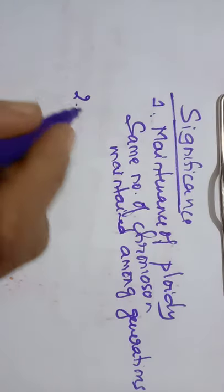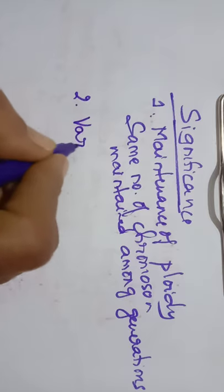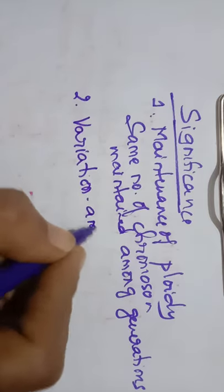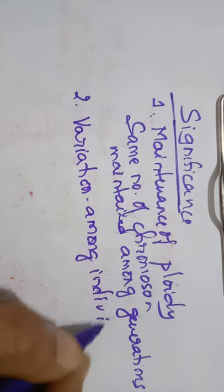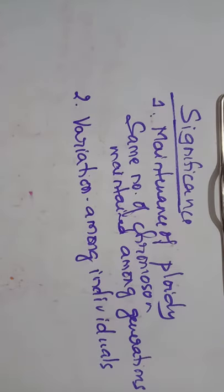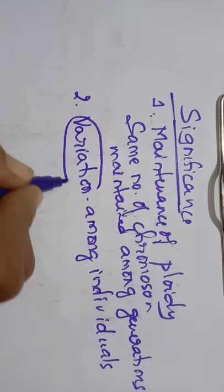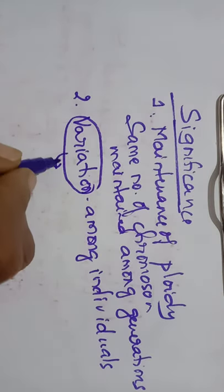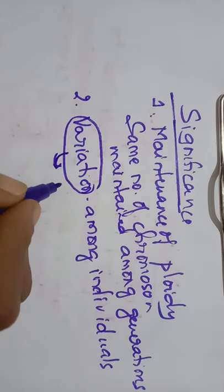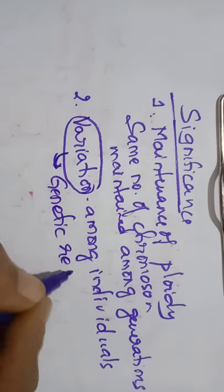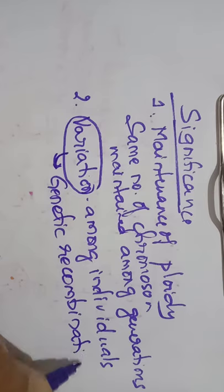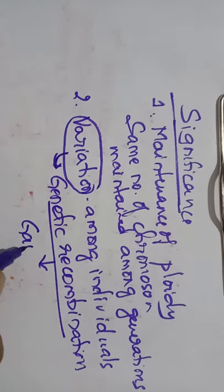The second important significance of meiosis is that it induces variation among individuals. For example, from the same parents you can have two kids, but both kids are not the same — you are not exactly like your brother or sister. This variation happens because of genetic recombination, which occurs during gamete formation.